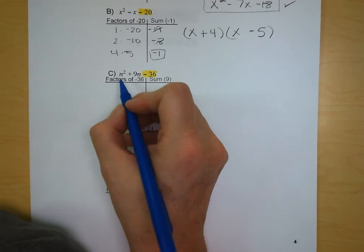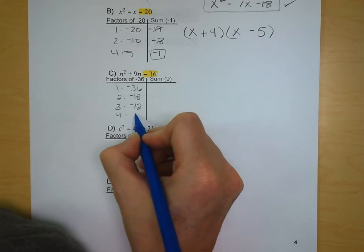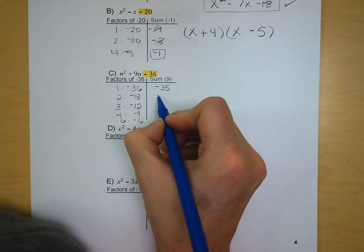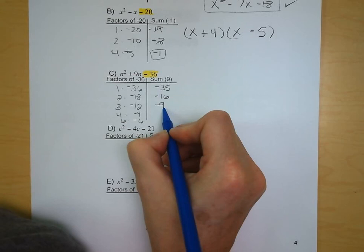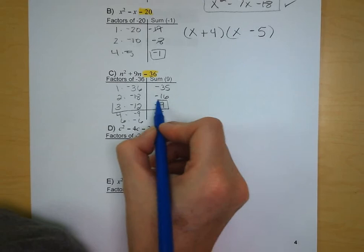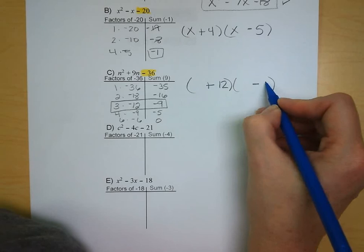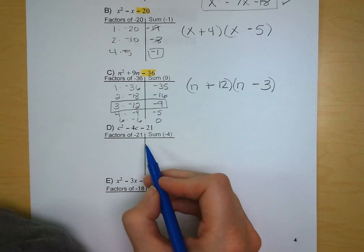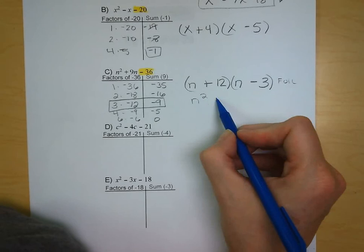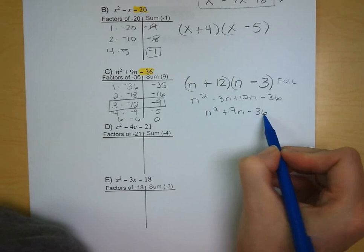Letter C: n squared plus 9n minus 36. Factors: 1 and negative 36, 2 and negative 18, 3 and negative 12, 4 and negative 9, 6 and negative 6. Their sums are negative 35, negative 16, negative 9, negative 5, and 0. We're looking for a sum of positive 9, so we need plus 12 and minus 3. FOIL check: n squared minus 3n plus 12n minus 36 = n squared plus 9n minus 36, which matches.